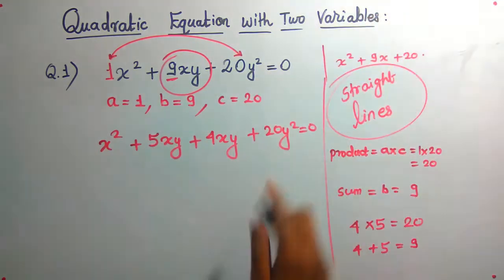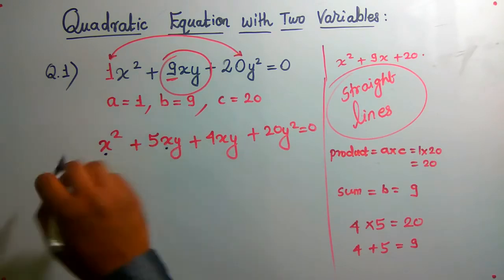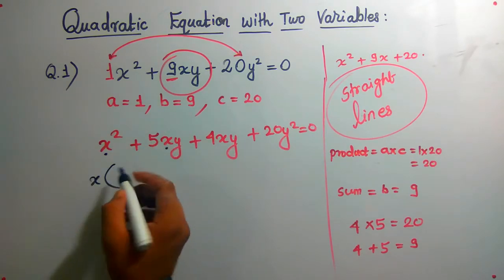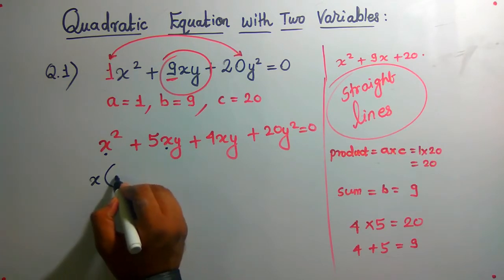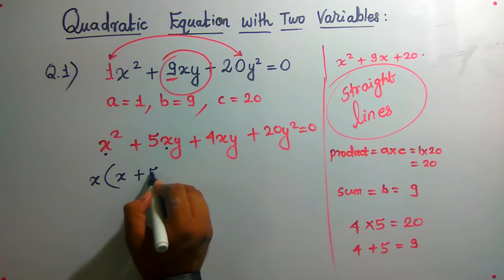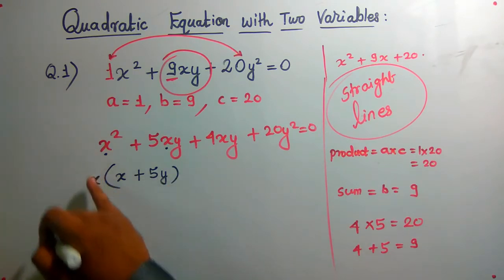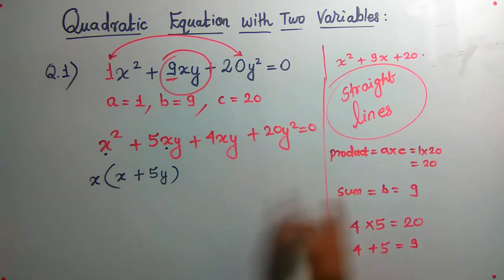Take x common from the first two terms. I would be left with x plus 5y. Cross check: x into x is x², x into 5y is 5xy. That's it.